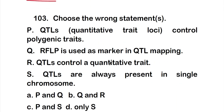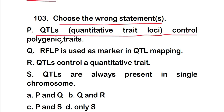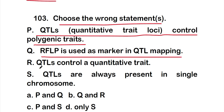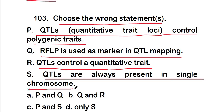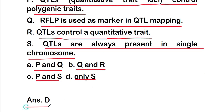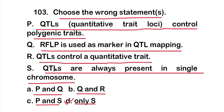Question 103: choose the wrong statement. Statement P: QTLs (quantitative trait loci) control polygenic traits. Statement Q: RFLP is used as a marker in QTL mapping. Statement R: QTLs control a quantitative trait. Statement S: QTLs are always present on a single chromosome. Options: A = P and Q, B = Q and R, C = P and S, D = only S. The right answer is Option D — only S. QTLs are always present on a single chromosome is the wrong statement.